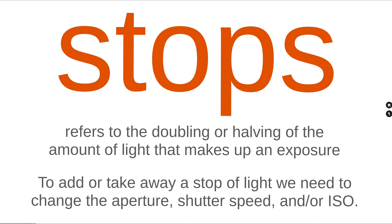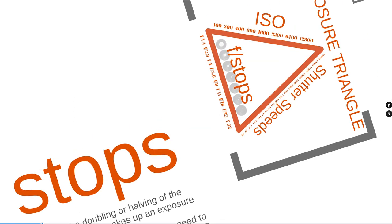Each photo we take requires a certain quantity of light to expose it correctly, and our light meter helps with this. Adding a stop of light by doubling the exposure will brighten the image by one stop. Conversely, decreasing an exposure by one stop — halving the amount of light — will darken an image by one stop. To add or take away a stop of light, we just need to change either the aperture, the shutter speed, or the ISO.